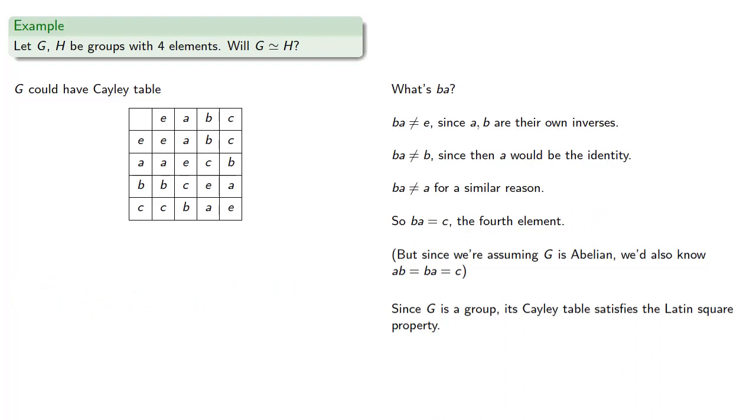And we see that A squared equals B squared equals C squared equals the identity, so every element has order two.